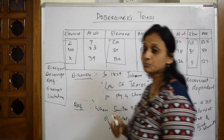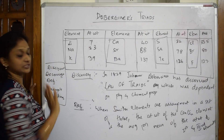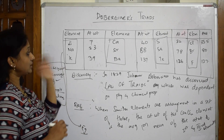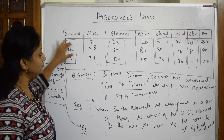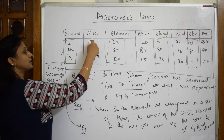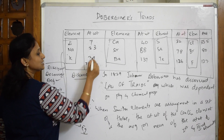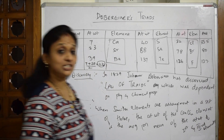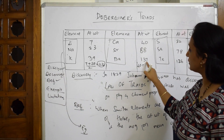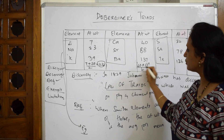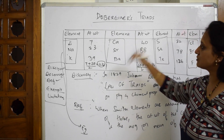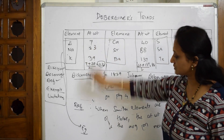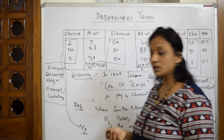Now he had to prove his definition with examples. He took the first set: lithium, sodium, potassium — atomic weights 7, 23, 39. So 7 plus 39 divided by 2 gives 23, the atomic weight of sodium. Next, calcium, strontium, barium — the average of the first and last gives the atomic weight of strontium. This validated his law.